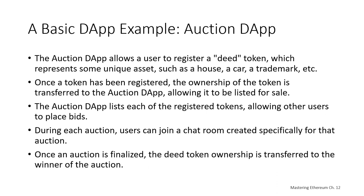Once our non-fungible token has been registered, the ownership of the token is transferred to the auction DAP, where it's allowed to be listed for sale. The auction DAP then lists each of the registered NFTs, allowing others to place bids. During each auction, users can join a chat room created specifically for that NFT auction. Once the NFT auction is finalized, the token ownership is transferred to the winner.